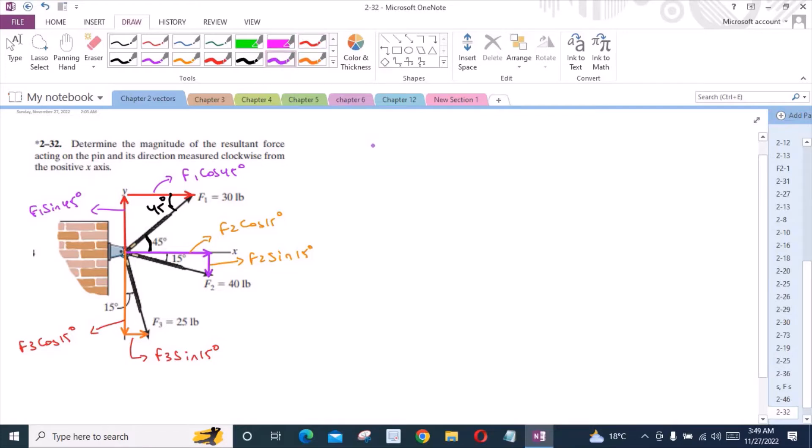Now I can write F1 in terms of position vector as F1 cos 45 degrees i plus F1 sin 45 degrees j. And for the force F2, I have F2 cos 15 degrees i minus F2 sin 15 degrees j. It is minus because it is directed in the direction of negative y-axis.